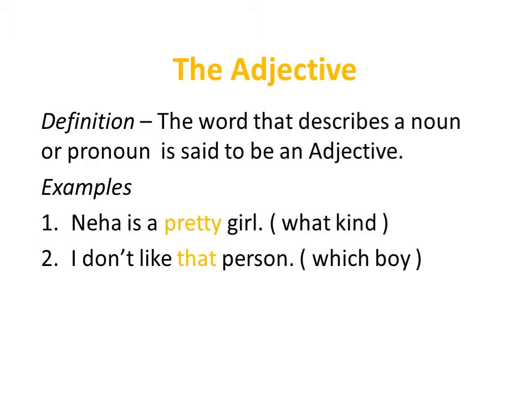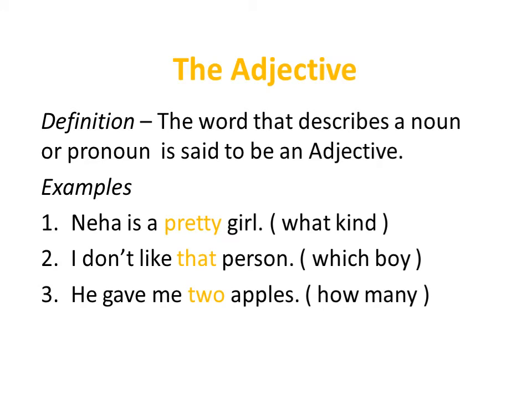'I don't like that person.' Here 'that' is playing the role of a describing word because it is telling us which person — that. So 'that' is also an adjective. 'He gave me two apples.' How many? Two. So the word 'two' is playing the role of a describing word and it is an adjective.